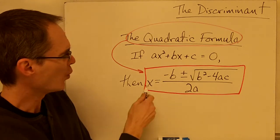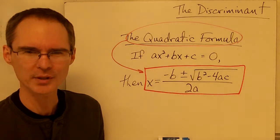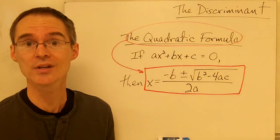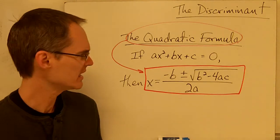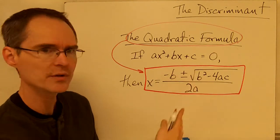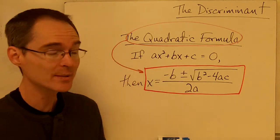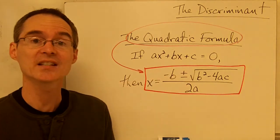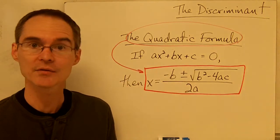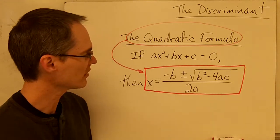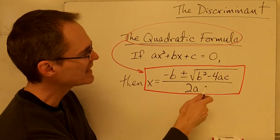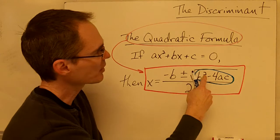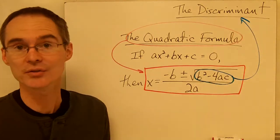You might be asking why you'd use this complicated formula when you already know how to solve a quadratic equation using factoring, which is a lot easier. It turns out factoring is typically the preferred method, but sometimes you have an expression that you can't factor. In that case, you might have to use the quadratic formula. There's a particular piece of the quadratic formula — the part underneath the radical sign — and that part is called the discriminant.